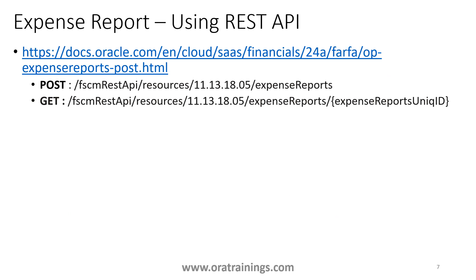The next thing is how to create an expense report using REST API. REST API supports almost all operations: POST, GET, and PATCH. The POST operation is for the purpose of creating an expense report — you can create an expense report with an expense line as well. Similarly, since it has a create option, it also has a GET option. We can fetch an expense report based on the expense report ID, which is the unique ID to identify an expense report in Oracle Fusion.